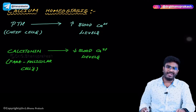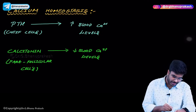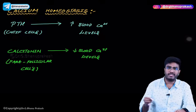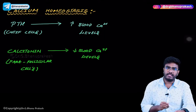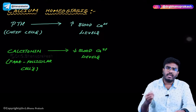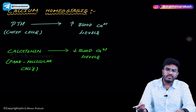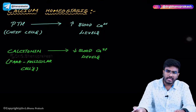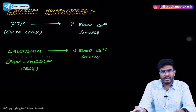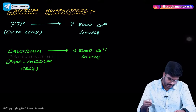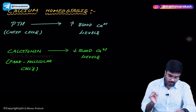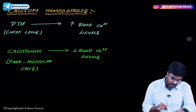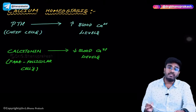In this video, let's discuss calcium homeostasis. Parathyroid hormone (PTH) is produced from the parathyroid gland. The cells in the parathyroid gland are called chief cells, and these chief cells produce PTH. The important function of PTH is to increase blood calcium levels.